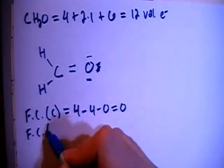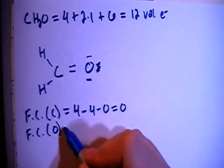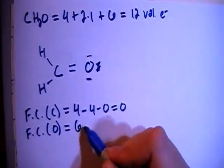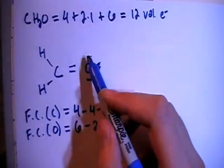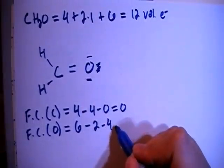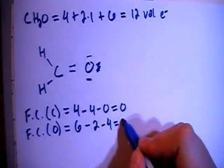The formal charge on the oxygen is going to be 6 valence brought in, minus 2 bonds, minus 1, 2, 3, 4 non-bonding electrons for a formal charge of 0.